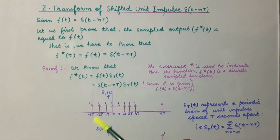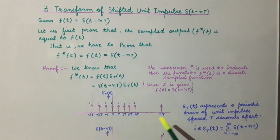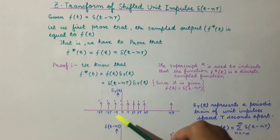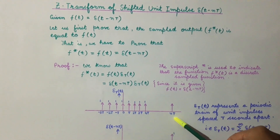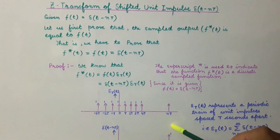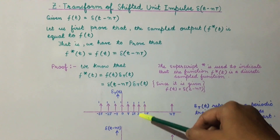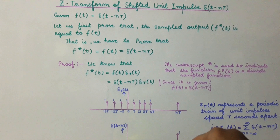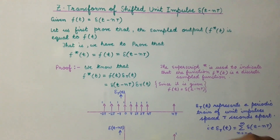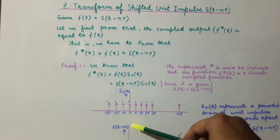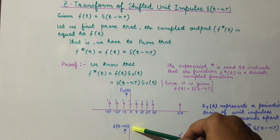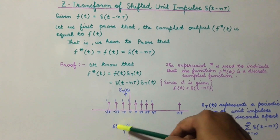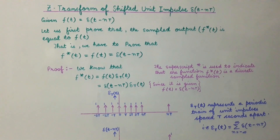The plot of δ_T(t) has been shown in this graph, from which we find that this is a periodic train of unit impulses which are T seconds apart from each other and the magnitude of each pulse is equal to 1. Similarly, this is the graph of a delayed impulse function delta(t - nT), that is the graph of the shifted unit impulse function delta(t - nT).